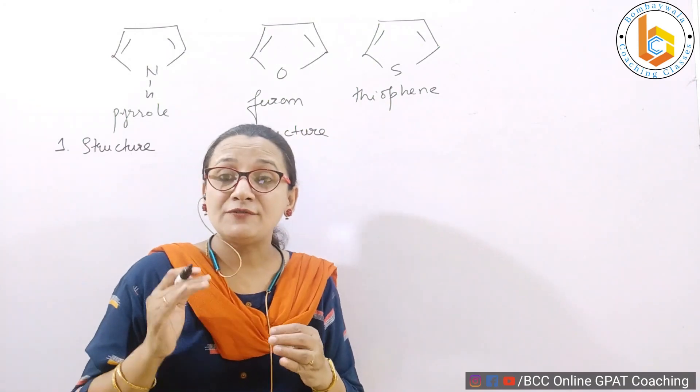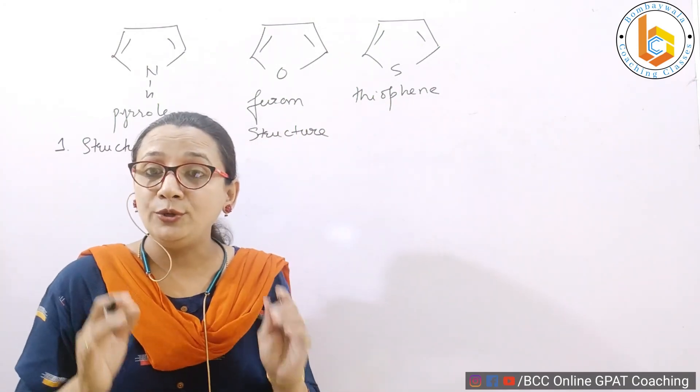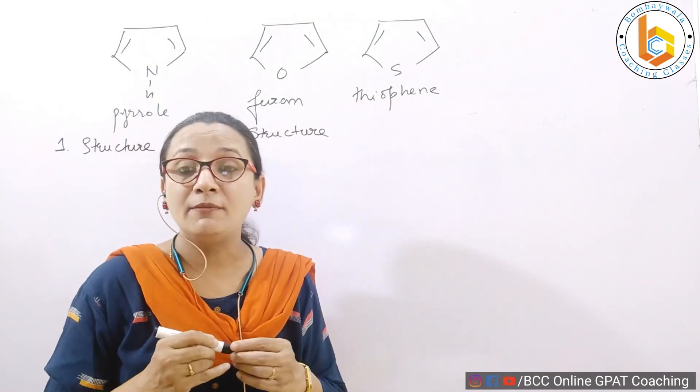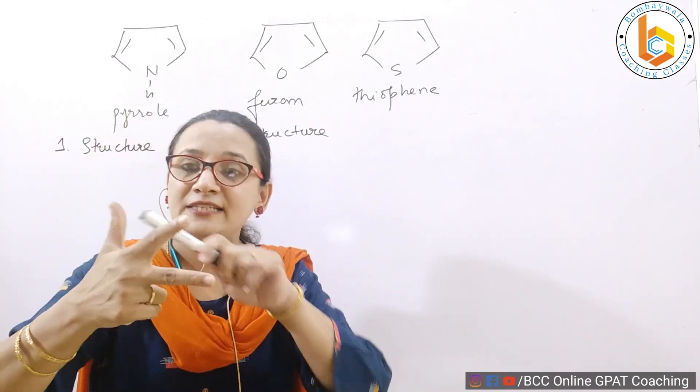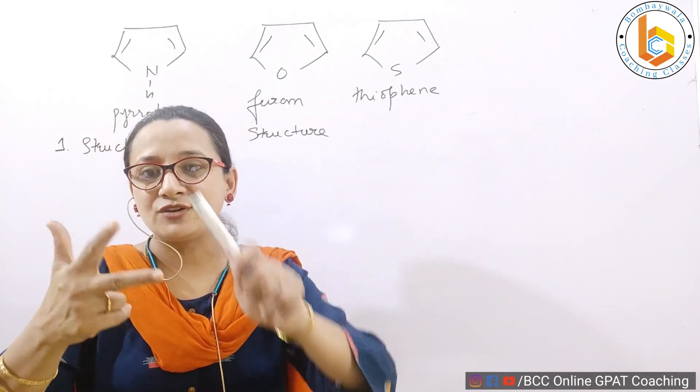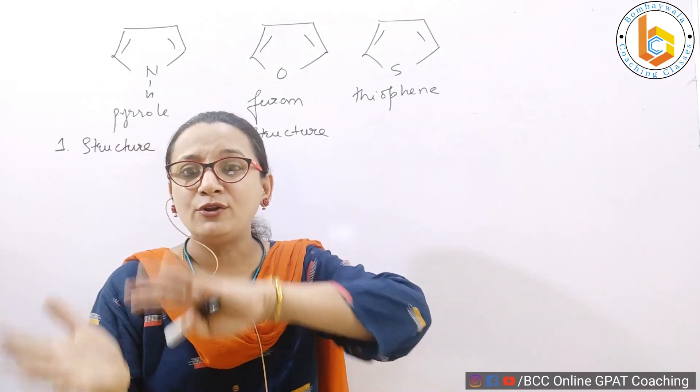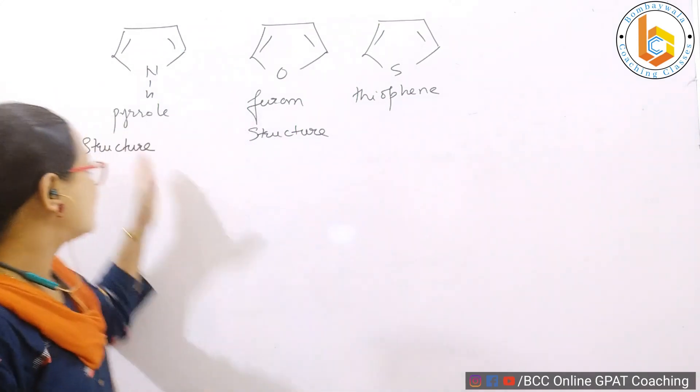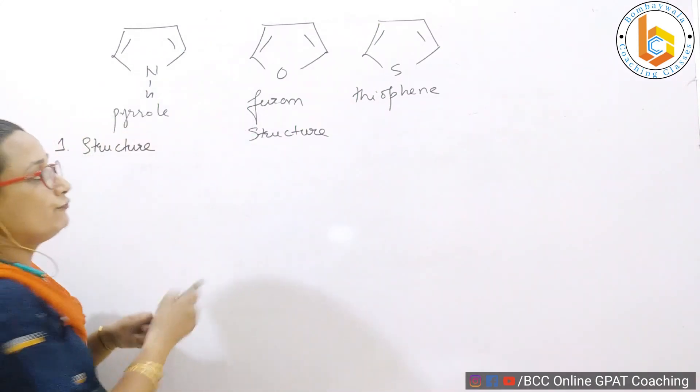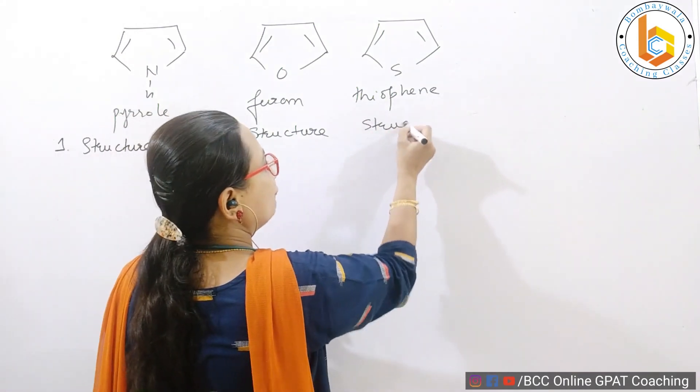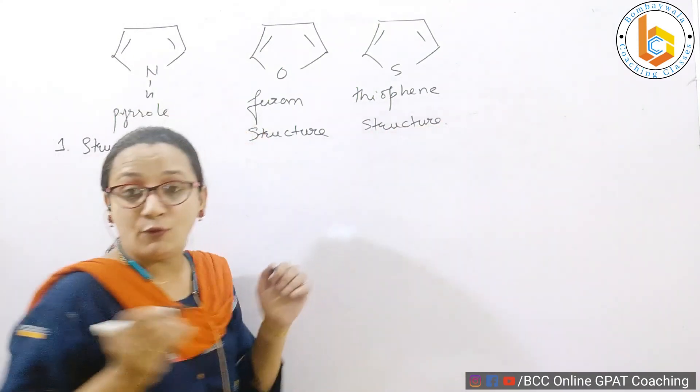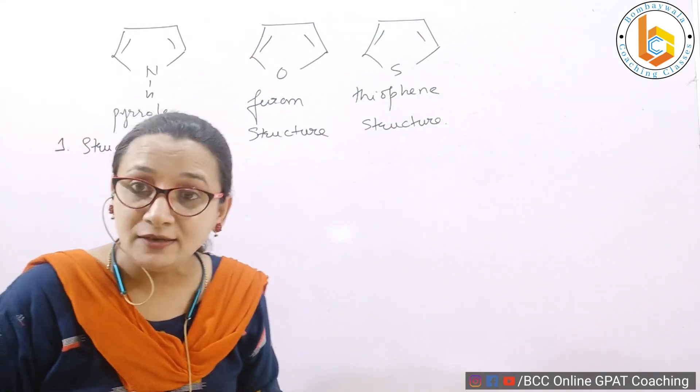You must have seen my videos on polynuclear aromatic compounds - naphthalene, anthracene, or phenanthrene - isi tarike se padhaya, teeno ka structure ek hi line, because it's a matter of copy pasting. So I will take structure of pyrrole, structure of furan, and structure of thiophene. But before this, I would want all my students to go through benzene once again.